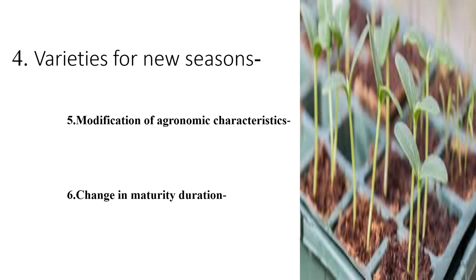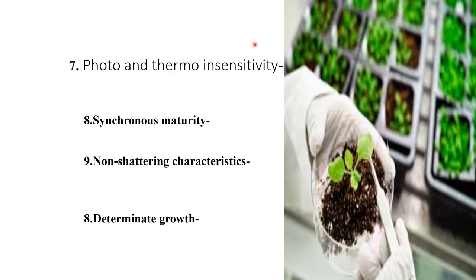Development of wheat varieties suitable for late planting has permitted rice-wheat rotation. This objective is most desirable especially in areas where multiple cropping systems are followed. The development of photo- and thermo-insensitive wheat and photo-insensitive rice varieties has permitted their cultivation in new areas, for example cultivation of wheat in Kerala and West Bengal, and rice in Punjab and Himachal Pradesh.